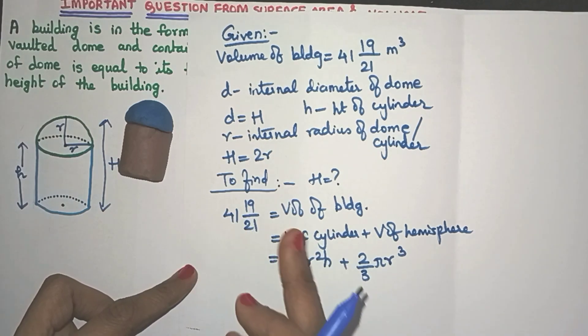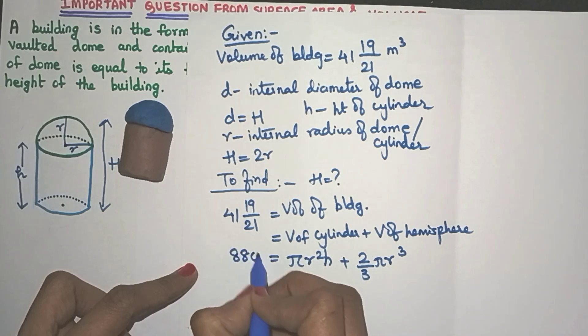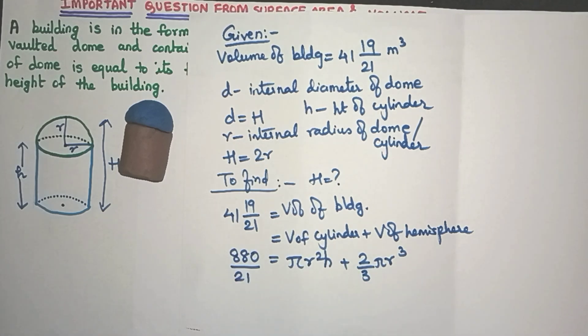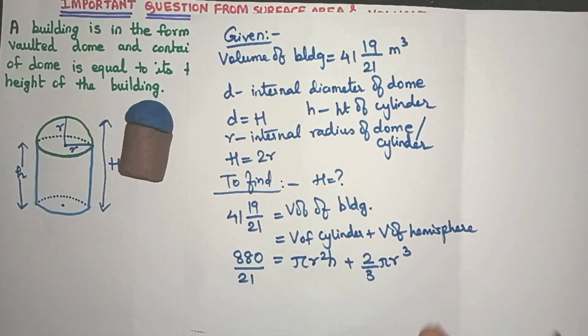Now 4119 by 21 definitely we have to convert it to improper. So when you do that friends, we'll get it as 880 by 21. You can just check it out. Now here is an equation and we have two unknowns. We don't know what is R and we don't know what is H.